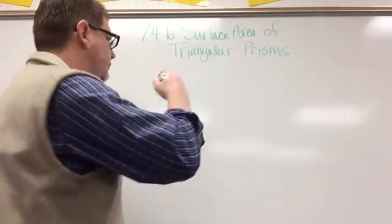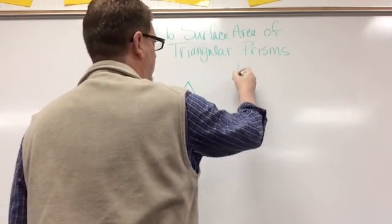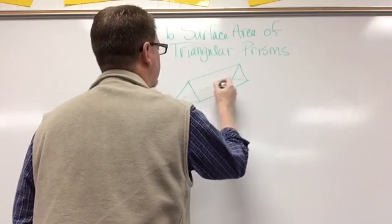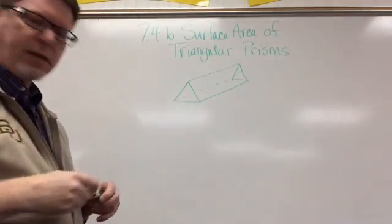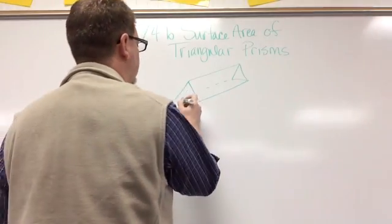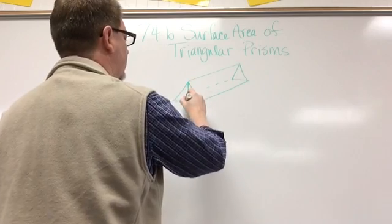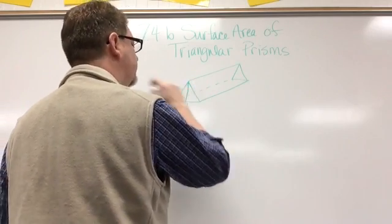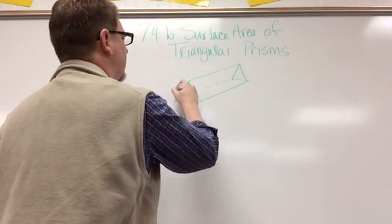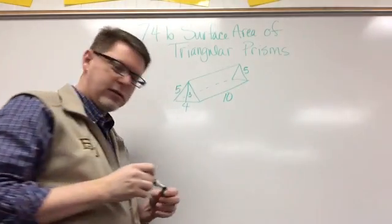So let's draw a triangular prism. I'm going to draw a triangle, and I'm going to draw another triangle over here, and I'm going to connect them. We're going to add in a few dimensions here. This side is going to be four, the height of the triangle right here is going to be three, the side of the triangle is going to be five, and it's going to be ten centimeters long.